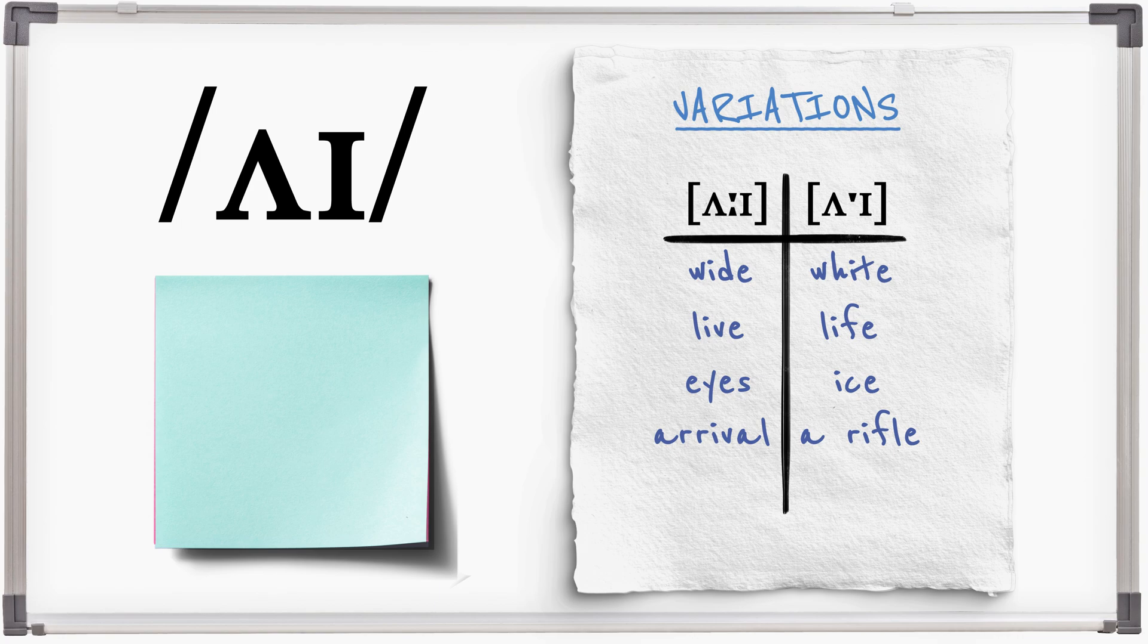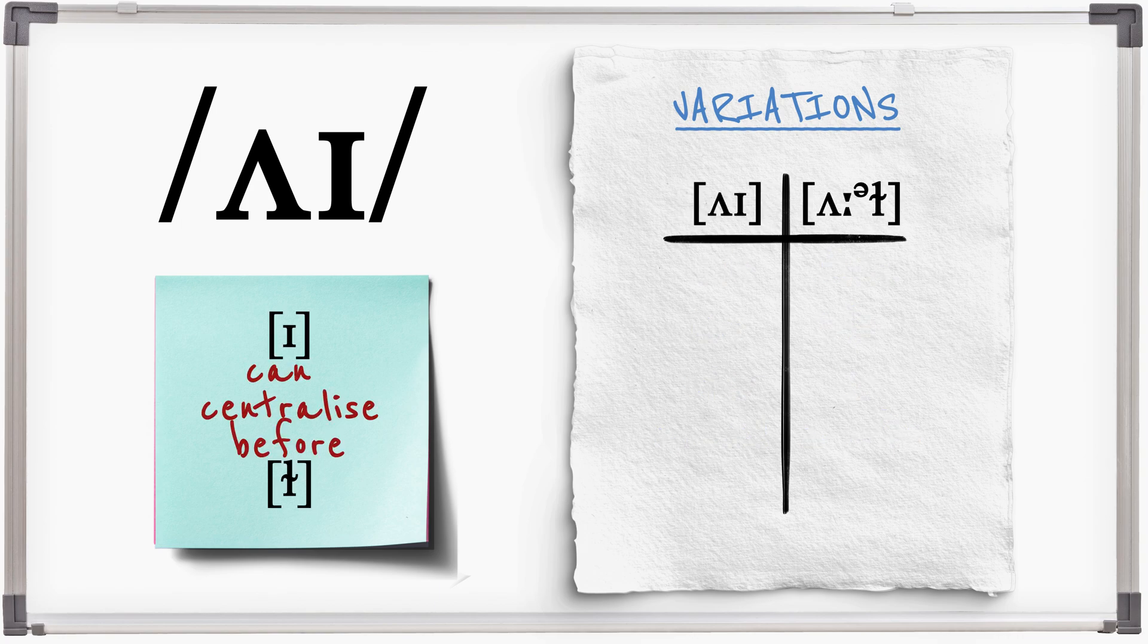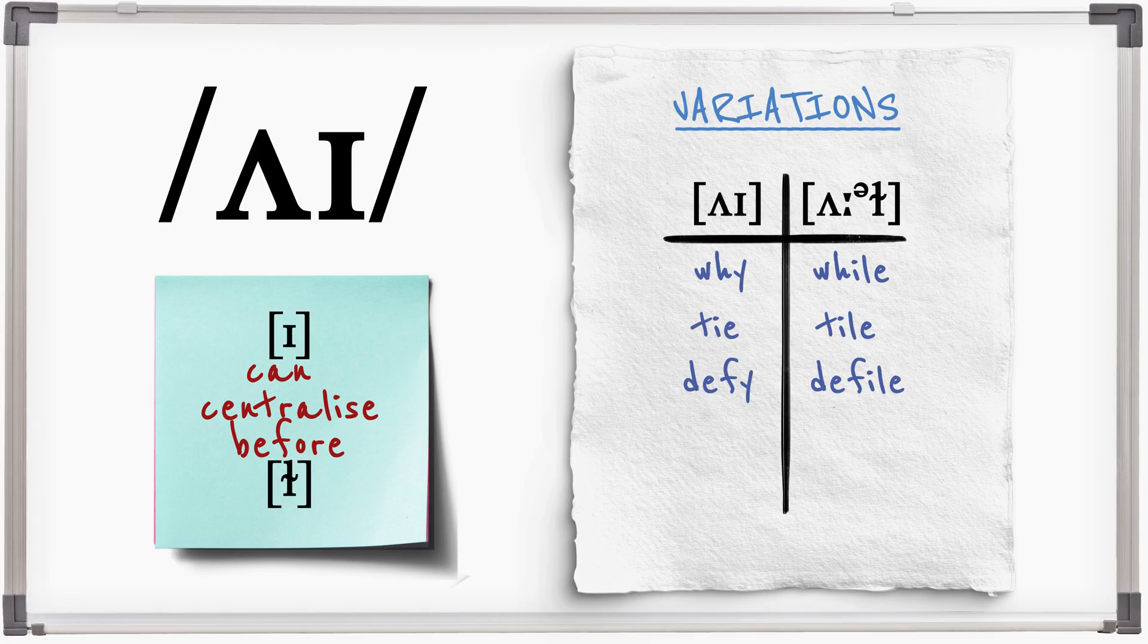The second part of the diphthong can become central and virtually disappear before dark L. Compare: why, while, tie, tile, defy, defile, my, mile.